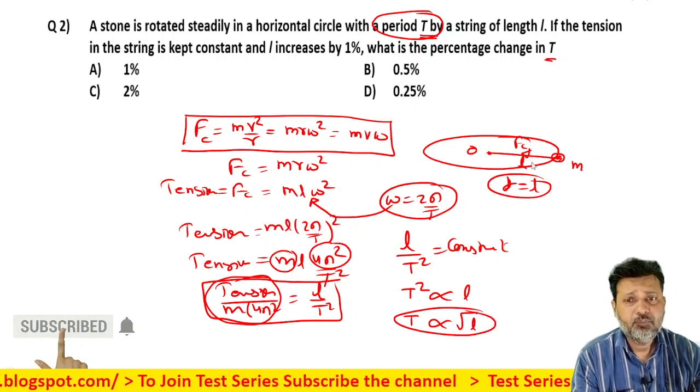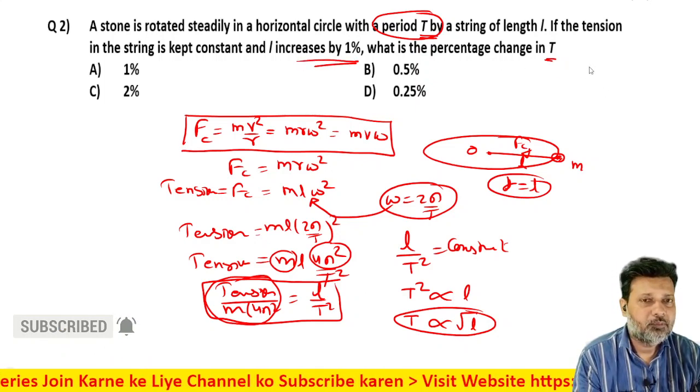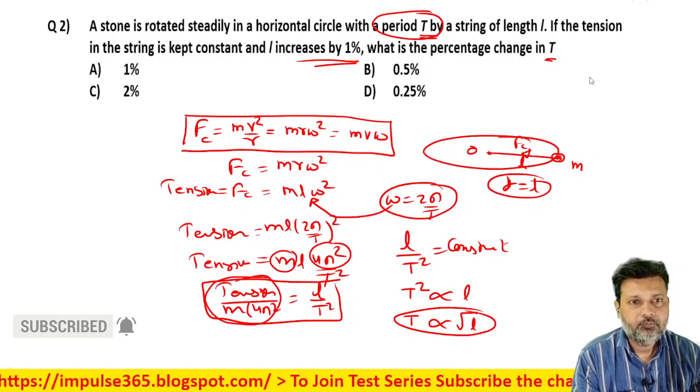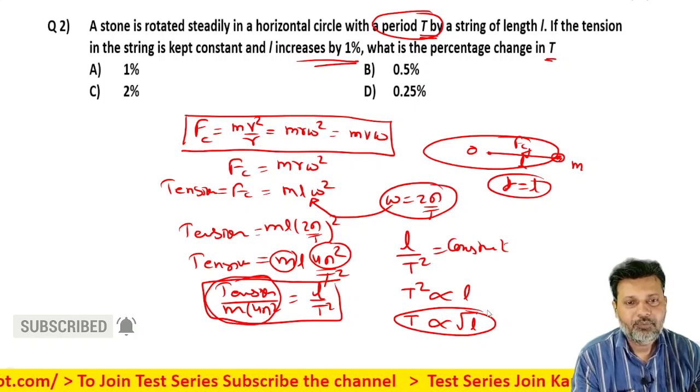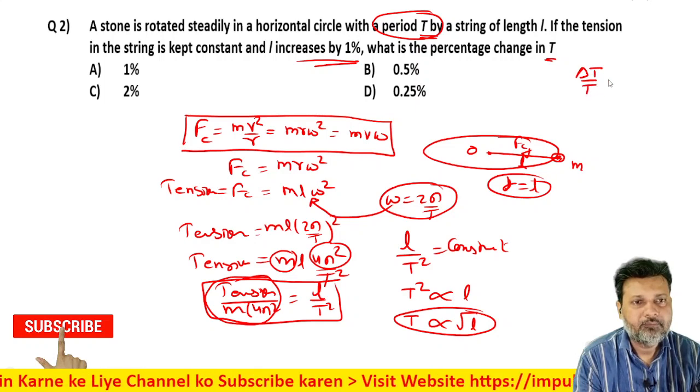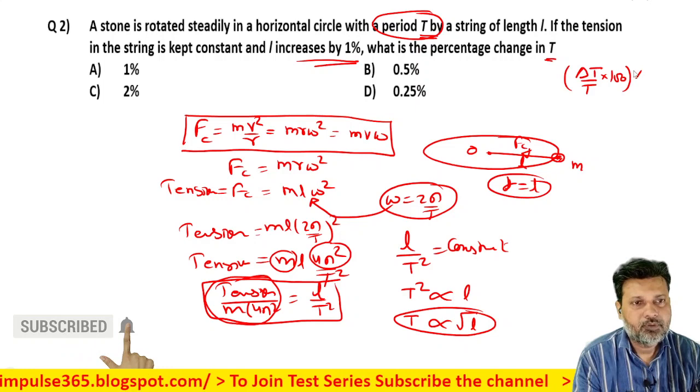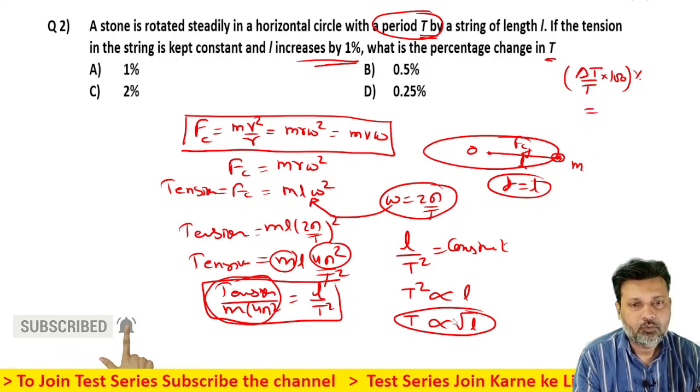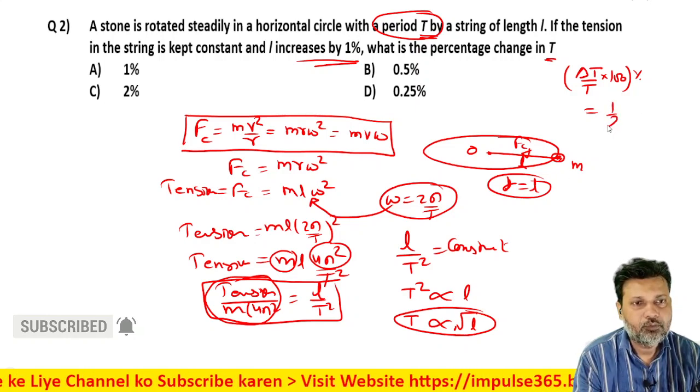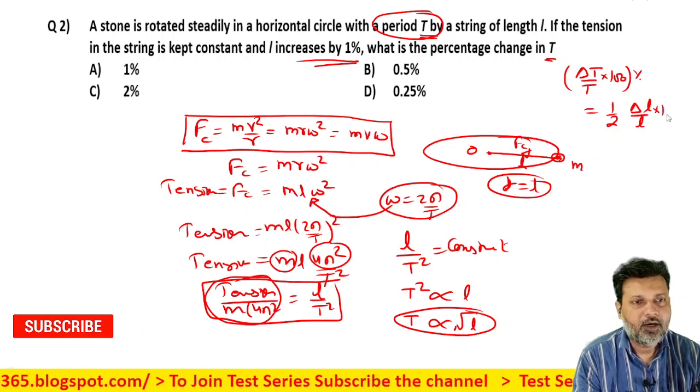Now the important point is that percentage change is asked. We have already studied percentage change in unit and measurement or error. So percentage change will be delta T upon T into 100. This becomes equal to - since L has power 1/2 because of the root - alpha power 1/2, so this 1/2 comes down, and delta L upon L into 100.